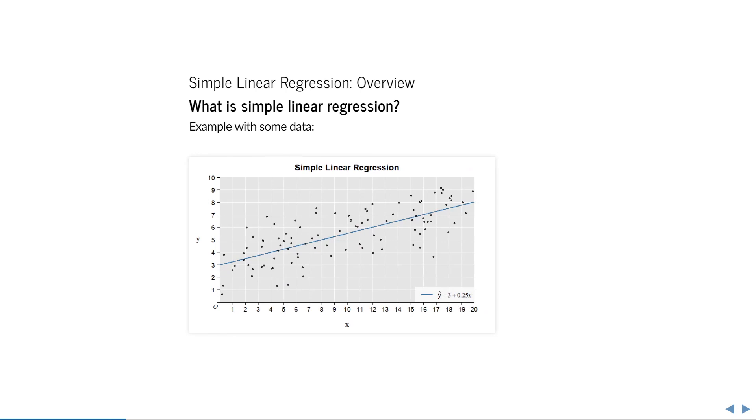Here is an example of what I mean. The intercept is where x is equal to zero, which in this model is at y equals 3. The slope is how much y increases when x increases by 1. This is equal to 0.25 in this example. So for every unit increase of x, y increases by 0.25.